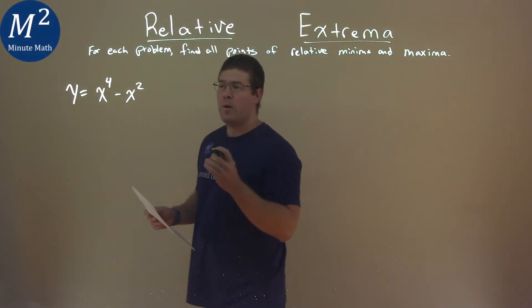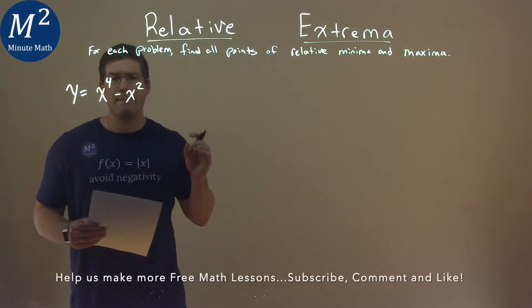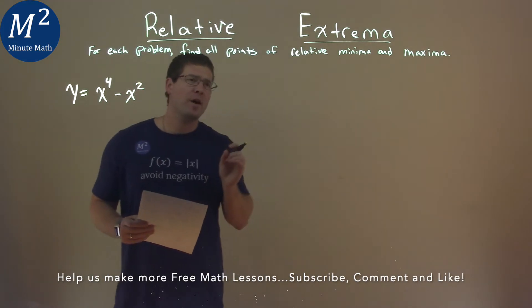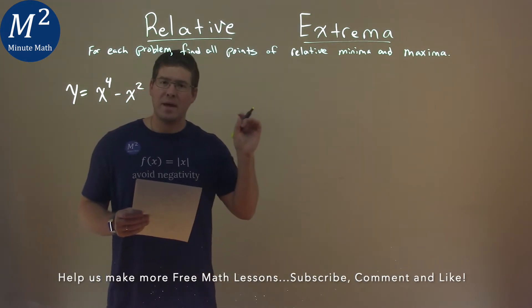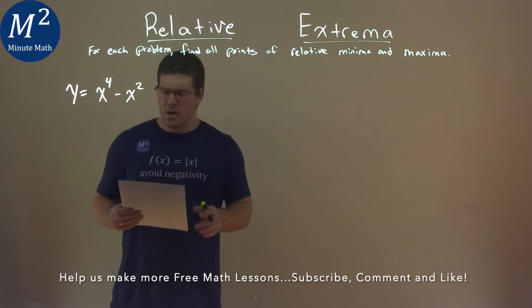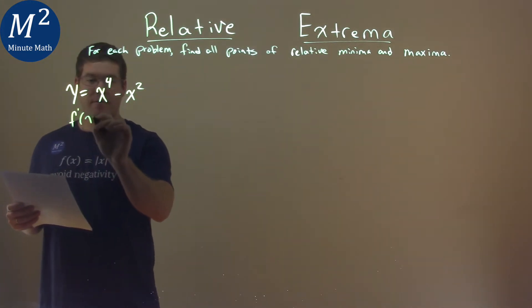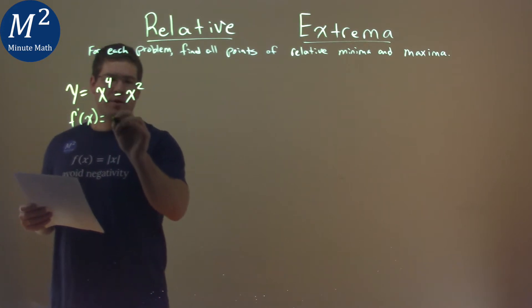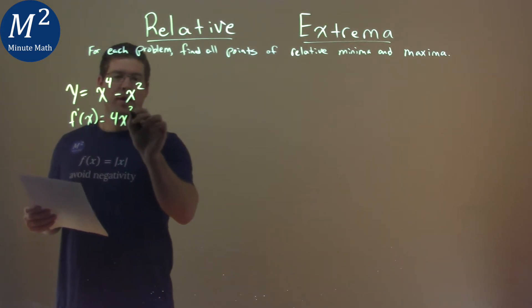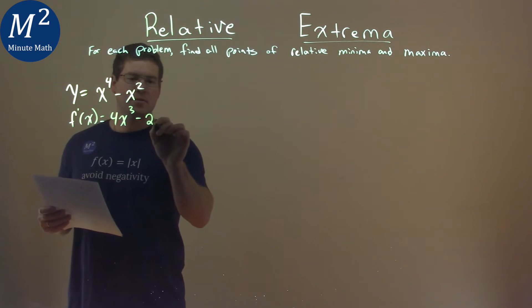We're given this problem right here, y equals x to the fourth power minus x squared, and we're going to find all the points of relative minimum and maximum. Well, from here I need to first find the derivative, so I find f prime of x, and the power will come down 4x to the third power minus 2x here.